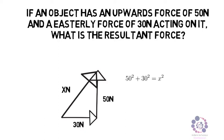We use Pythagoras and therefore 50 squared plus 30 squared equals x squared. If we calculate this we find out the square root of 3400. This equals 58.3 Newtons.